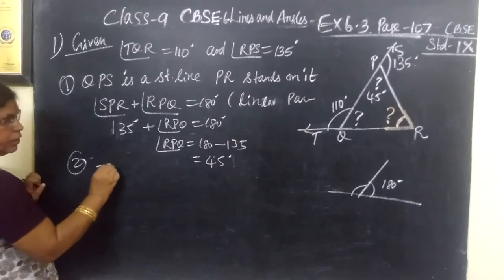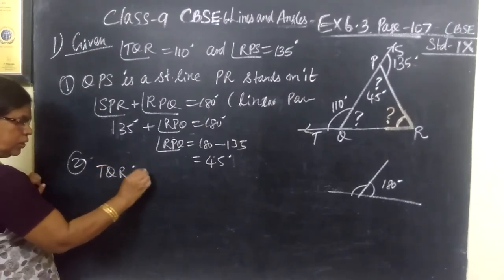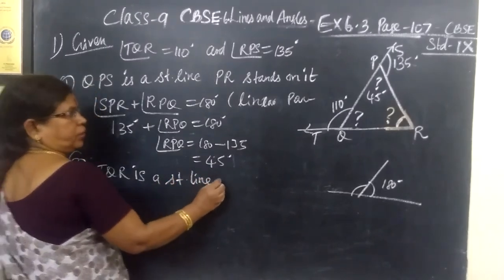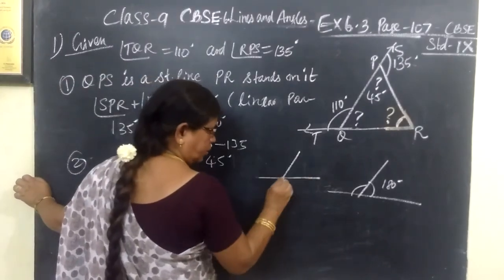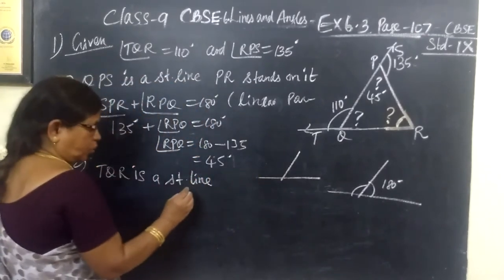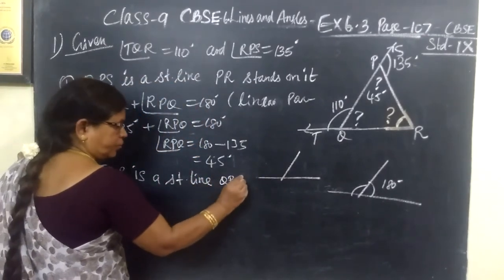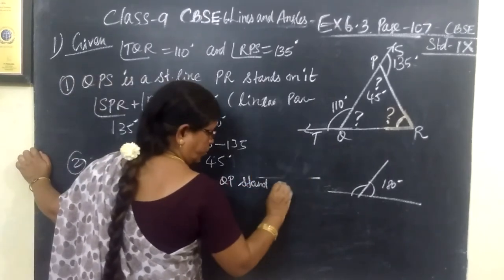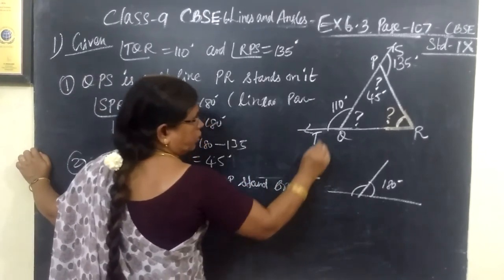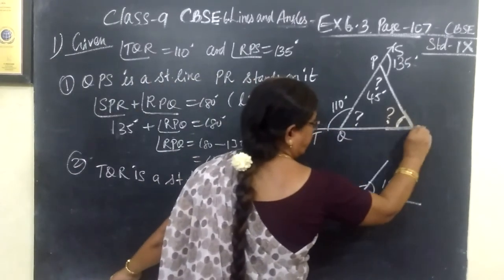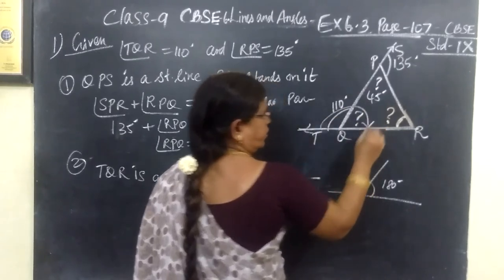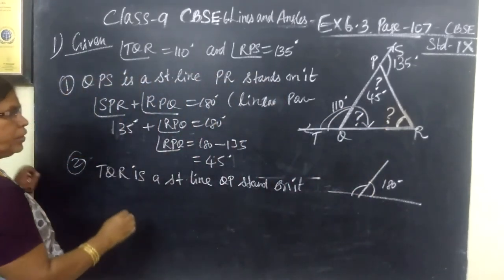In the same way, we can find the second one, which is a straight line. TQR is a straight line. And which ray stands on it? At Q, QP stands on it. Therefore, sum of the adjacent angles is 180 degrees.